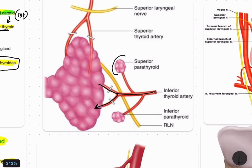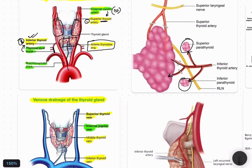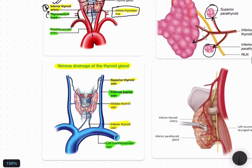An important point is that both the superior and inferior parathyroid glands are also supplied by the inferior thyroid artery. So if during thyroidectomy we cut the inferior thyroid artery, this will lead to hypoparathyroidism.